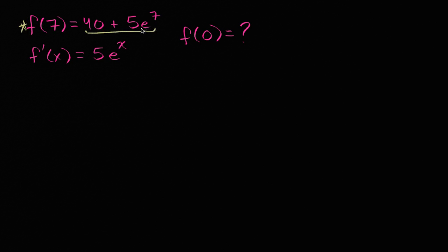This might look like an expression, but it is an expression — it's really just a number. There are no variables in this. And so we can use that to solve for our constant of integration, and then we will have fully known what f of x is, and we can use that to evaluate f of zero. So let's just do it.